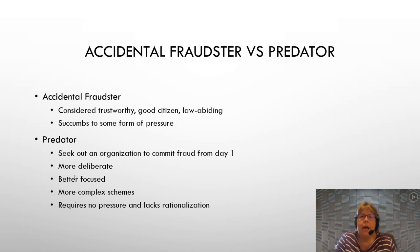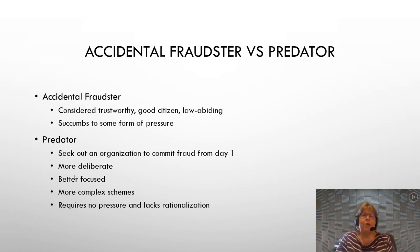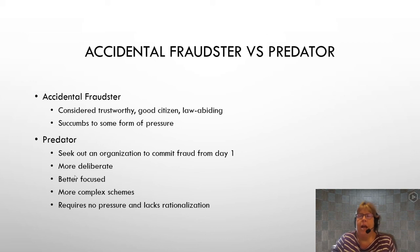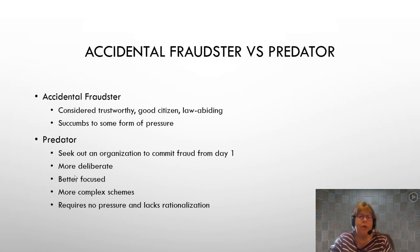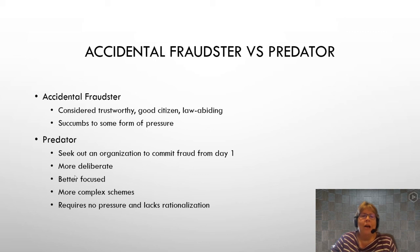After the fraud triangle came out, researchers looked at the accidental fraudster versus the predator. The accidental fraudster is normally a good person — trustworthy, well thought of, law abiding — and then some unique pressure happens in their life that turns the switch and allows them to take an opportunity for personal gain. Financial pressure is a common one, and for most of us this would be pretty dire circumstances.